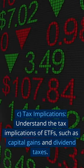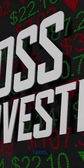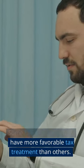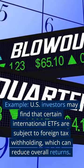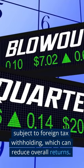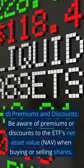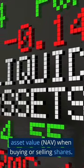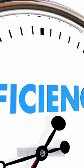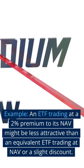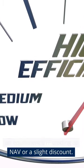C. Tax implications. Understand the tax implications of ETFs, such as capital gains and dividend taxes. Some ETF structures may have more favorable tax treatment than others. Example: U.S. investors may find that certain international ETFs are subject to foreign tax withholding, which can reduce overall returns. D. Premiums and discounts. Be aware of premiums or discounts to the ETF's net asset value (NAV) when buying or selling shares. This discrepancy can impact the cost-effectiveness of your investment. Example: an ETF trading at a 2% premium to its NAV might be less attractive than an equivalent ETF trading at NAV or a slight discount.